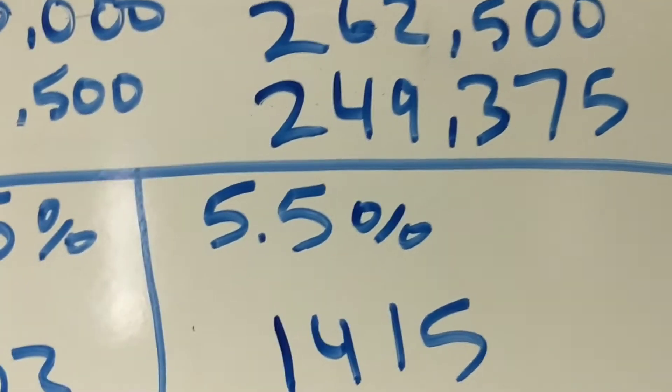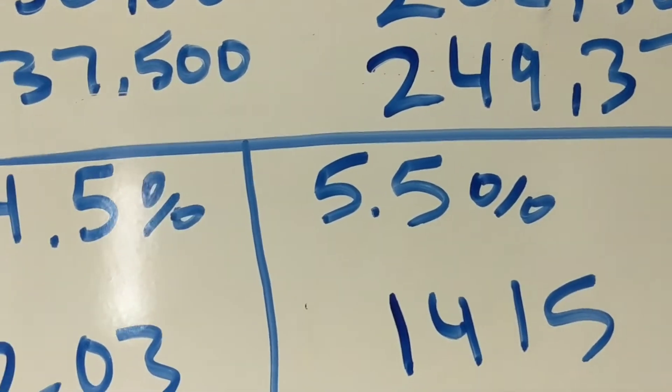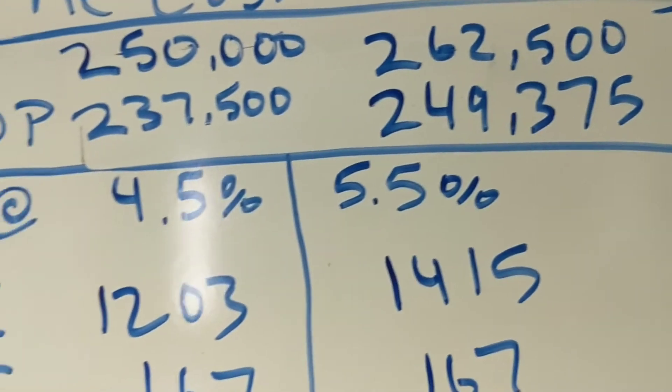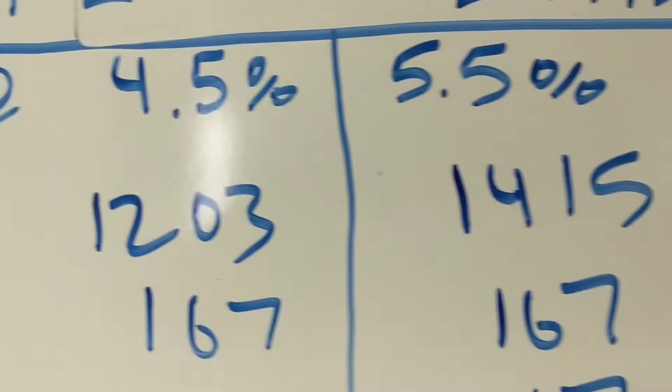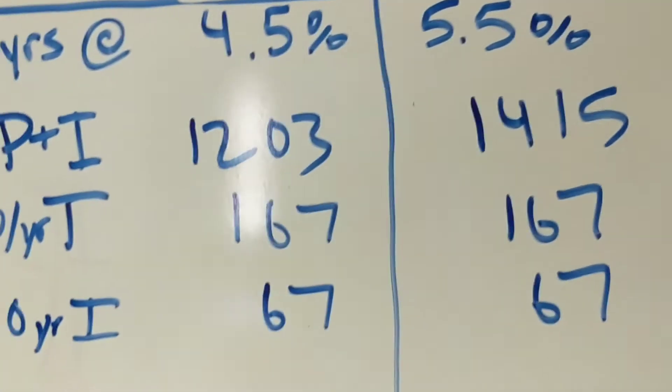4.5% versus 5.5%, which is perfectly possible since they've gone up three-quarters of a point in the last six months. That would be a difference in your principal and interest payment of just over $1,200 and just over $1,400 a month.